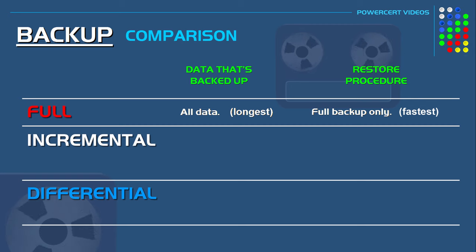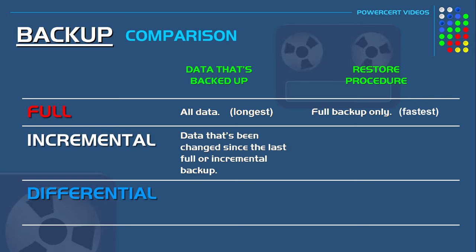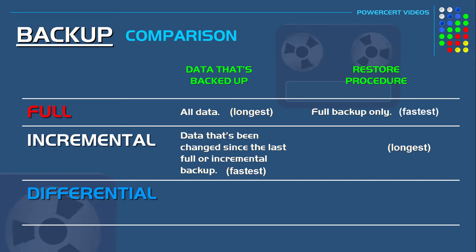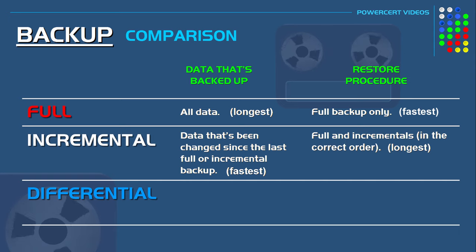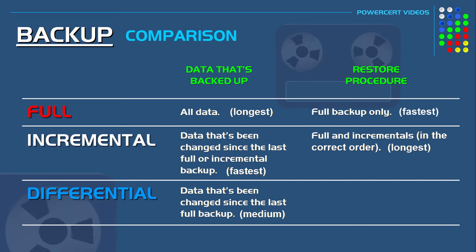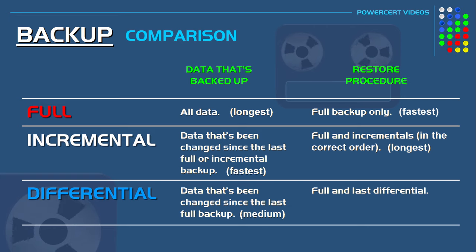An incremental backup backs up the data that has been changed since the last full or incremental backup. This is the fastest backup of the three because it only backs up the data that changed for that day. But during a data restore, it takes the longest because you have to restore the full backup along with all the incrementals in the same order they were backed up. A differential backup backs up the data changed since the last full backup — it's faster than a full backup but slower than an incremental. For a differential restore, you only need the full backup and the last differential backup, making the restore faster than an incremental restore but slower than a full restore.